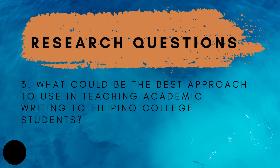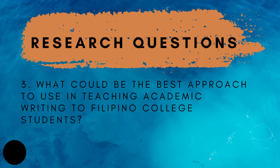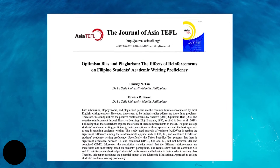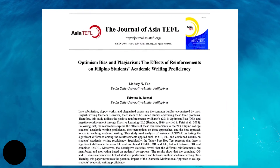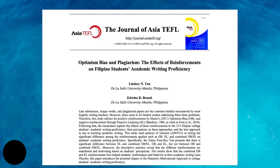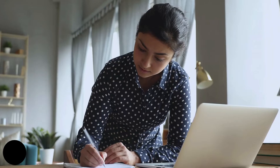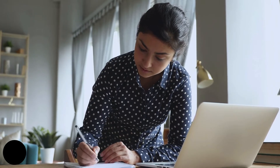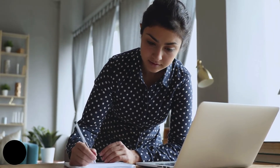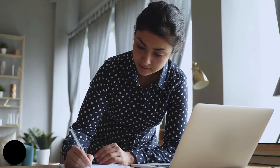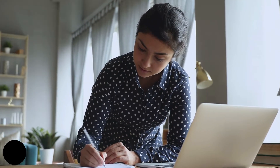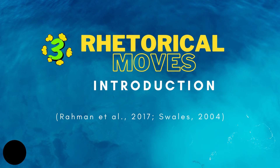You can also add research question number three: what could be the best approach to use in teaching academic writing to Filipino college students? We will be using a specific paper published in 2021 regarding optimism bias and plagiarism. First, we need to do research and find published research papers that are connected to your paper.